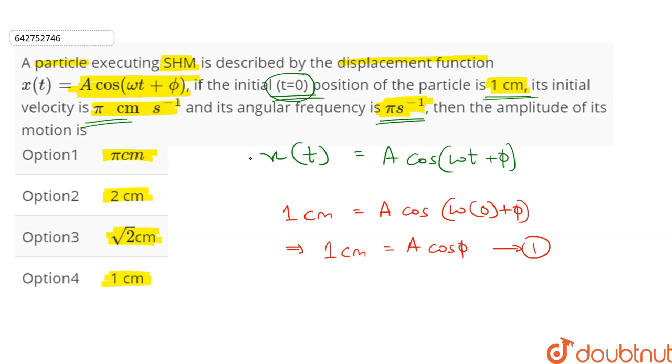So to find the velocity, we need to differentiate this equation. So we get v(t) = -Aω sin(ωt + φ).